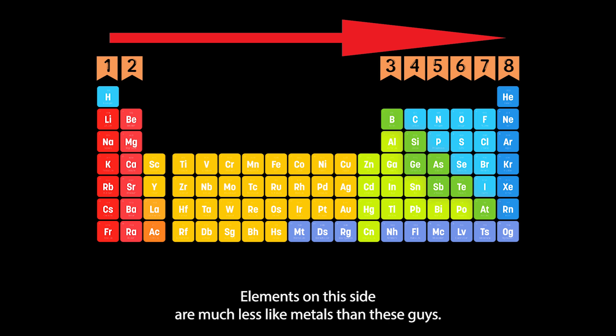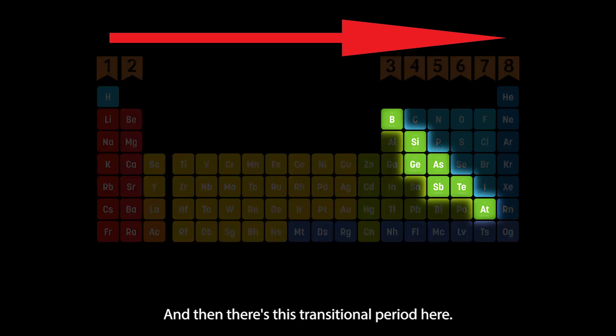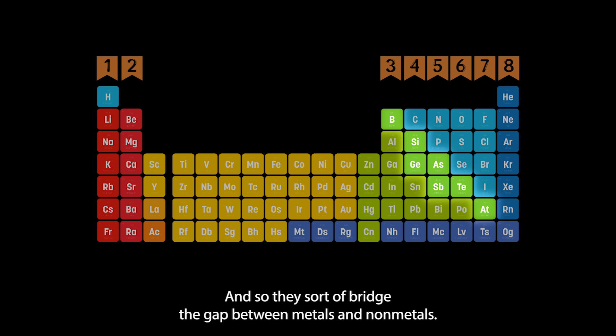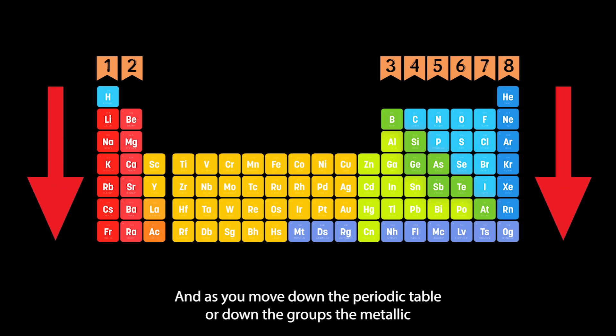Elements on this side are much less like metals than these guys. As you go from left to right, elements start to stop looking like metal and begin looking like non-metals. And then there's this transitional period here, these elements which are the semi-metals, and so they sort of bridge the gap between metals and non-metals.